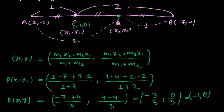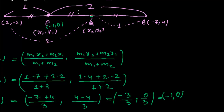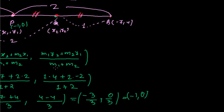Now we need to find the value of point Q. Since PQ equals QB, Q is the midpoint of the PB line. So I can use the midpoint formula here. The midpoint formula is just the average of the two endpoint coordinates, and I think the midpoint formula is best to use here.